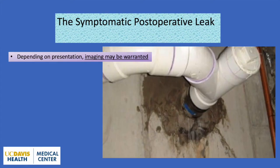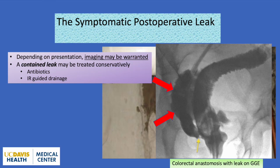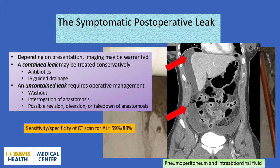Depending on a patient's presentation, imaging may be warranted. As demonstrated in this gastrograph enema study, a contained leak may be diagnosed, and this can typically be treated with antibiotics and drainage of the collection; the patient may need bowel rest. Alternatively, an uncontained leak, as noted in this CT scan, requires operative management, where a washout, interrogation of the anastomosis, and then possible revision, diversion, or takedown of the anastomosis may be needed.